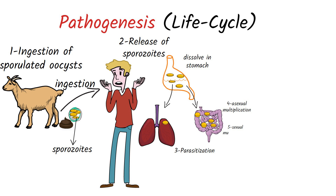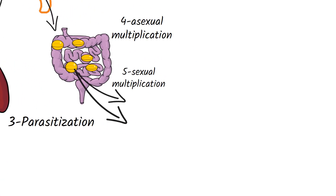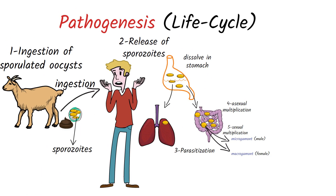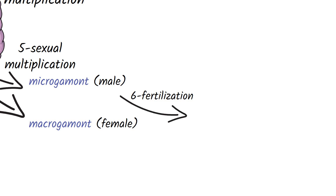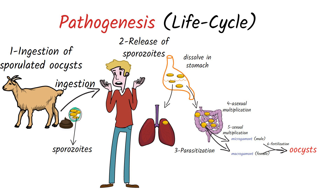After asexual multiplication, the parasites undergo sexual multiplication, producing male microgamontes and female macrogamontes gametes. Upon fertilization of microgamontes by the microgametes, oocysts develop. The oocysts then mature and sporulate in the infected host, producing two different types of oocysts.